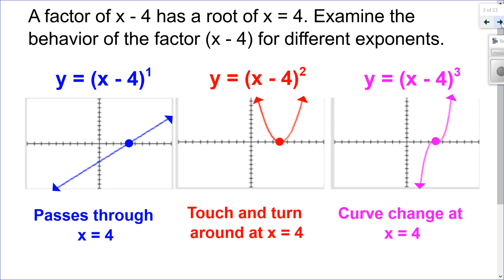Let's look at just taking the factor x minus 4. So x minus 4 has a root of x equal to 4, the x-intercept. You can see the x-intercept of all of these graphs is 4. But taking that factor of x minus 4 and raising it to different exponents, I'm going to get a different behavior at that x-intercept. When I have an exponent of 1, I'm just passing through. When the exponent is 2, I'm touching and turning around. When I cube it, there's a curve change — kind of like a slide through 4.